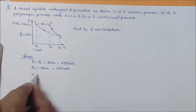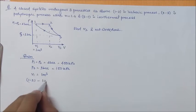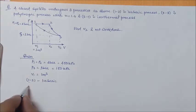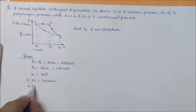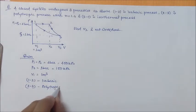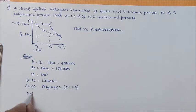V1 is 1 meter cube. We have the processes: 1 to 2 as isobaric, 2 to 3 as polytropic with n equal to 1.4, and 3 to 1 as isothermal.